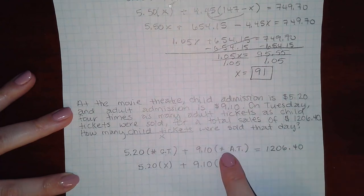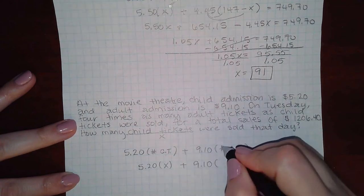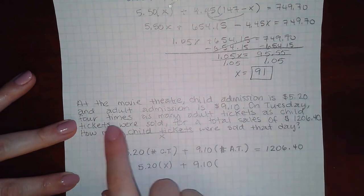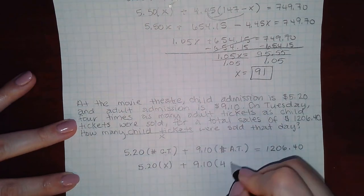And then here, we would use that extra information they gave us about their relationship. So it said there were four times as many adult tickets as child tickets. So this would be 4X.